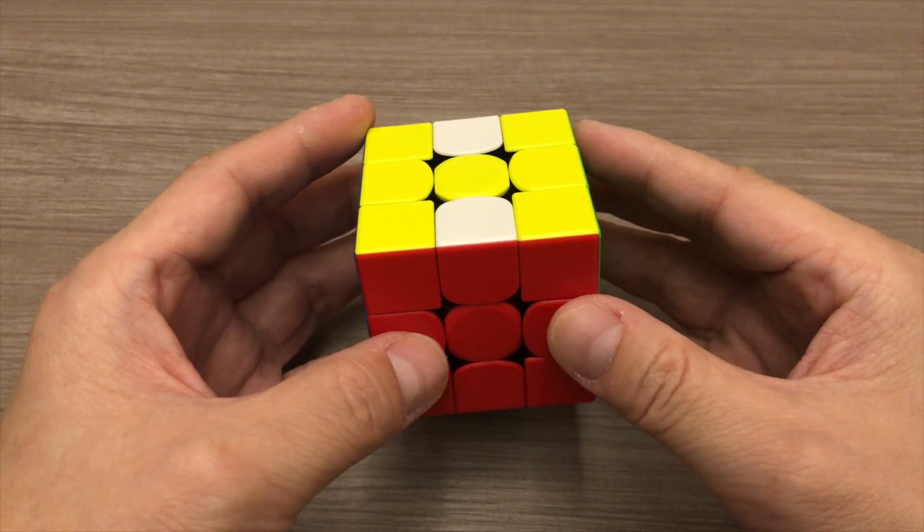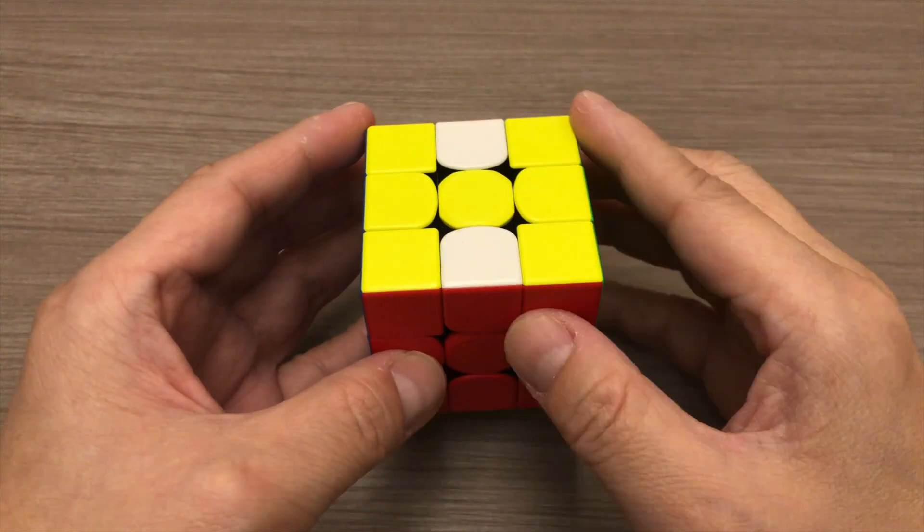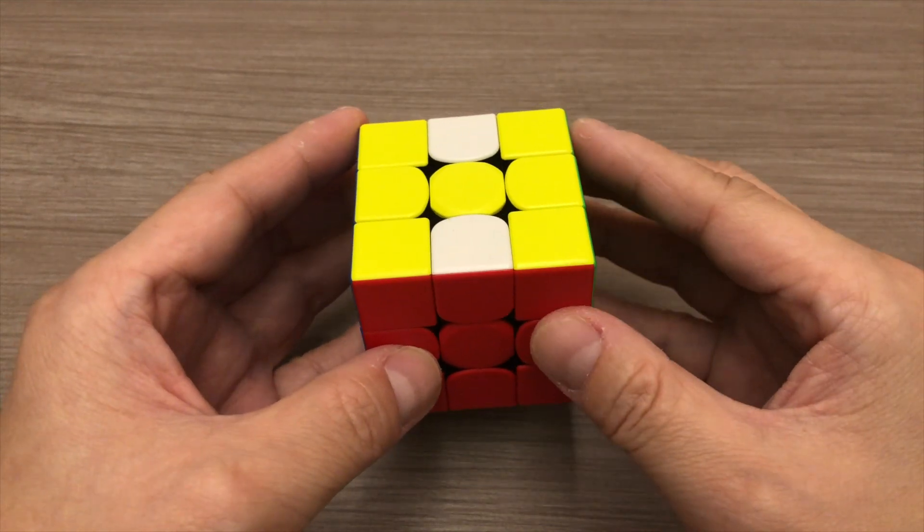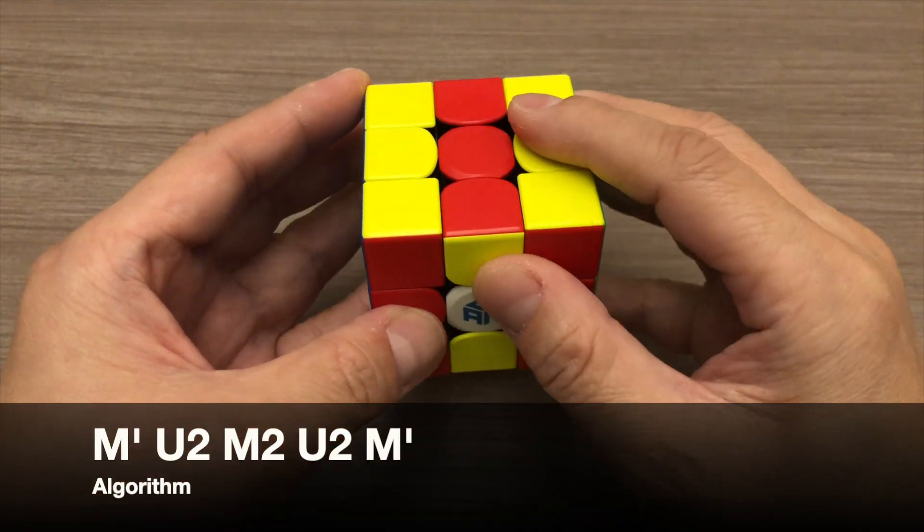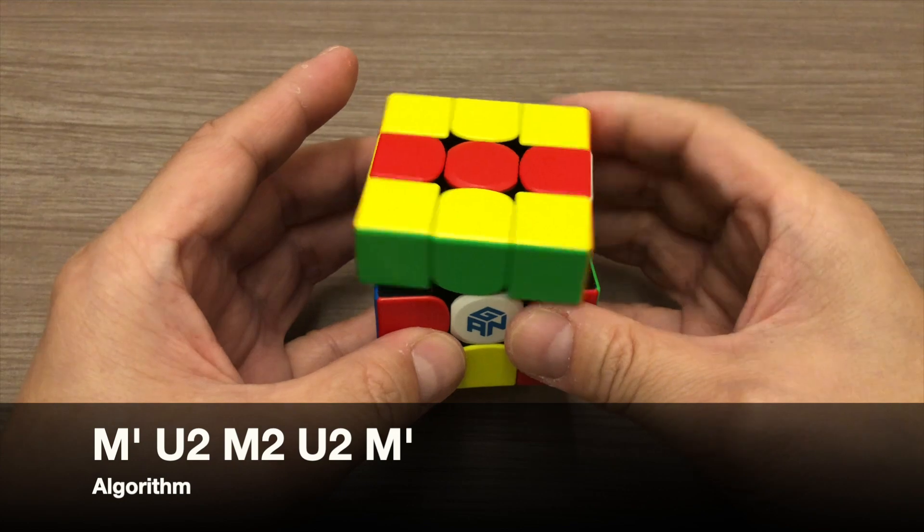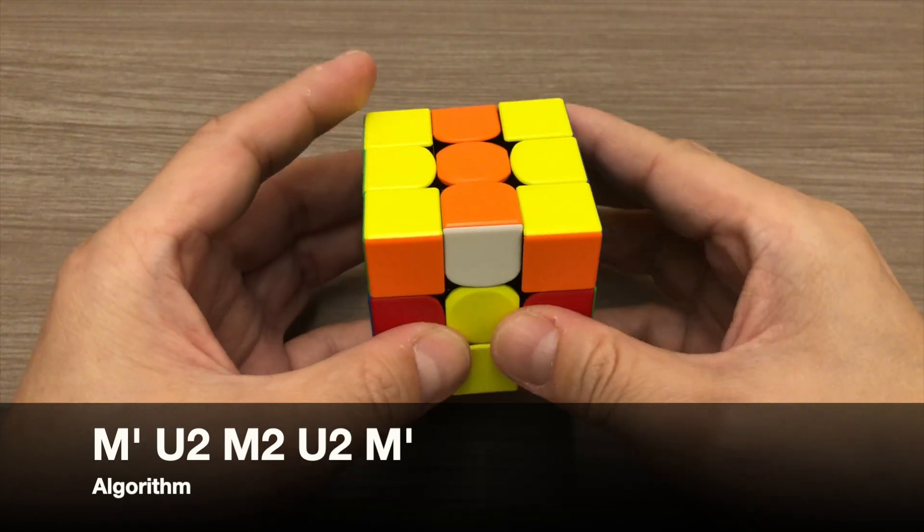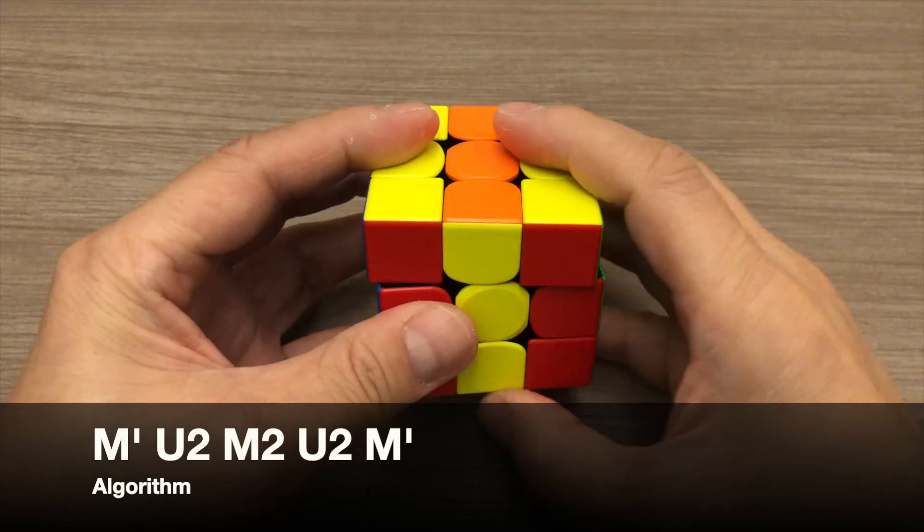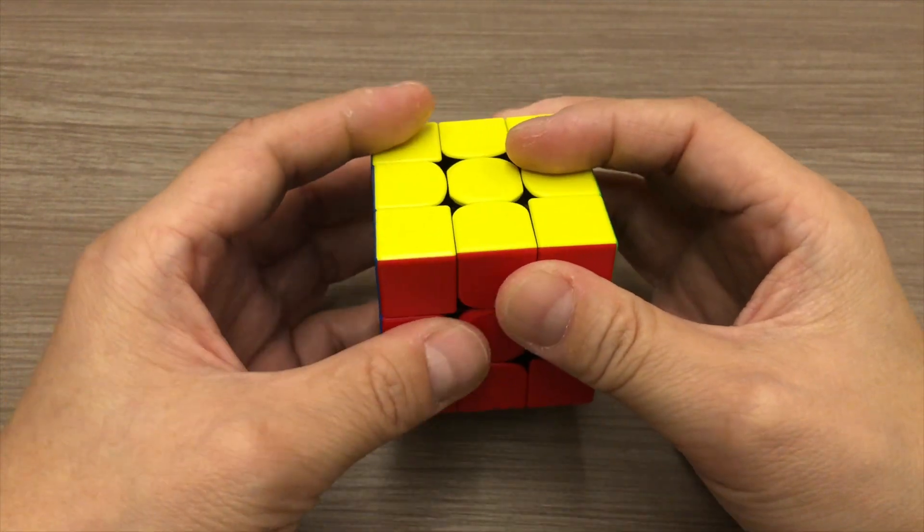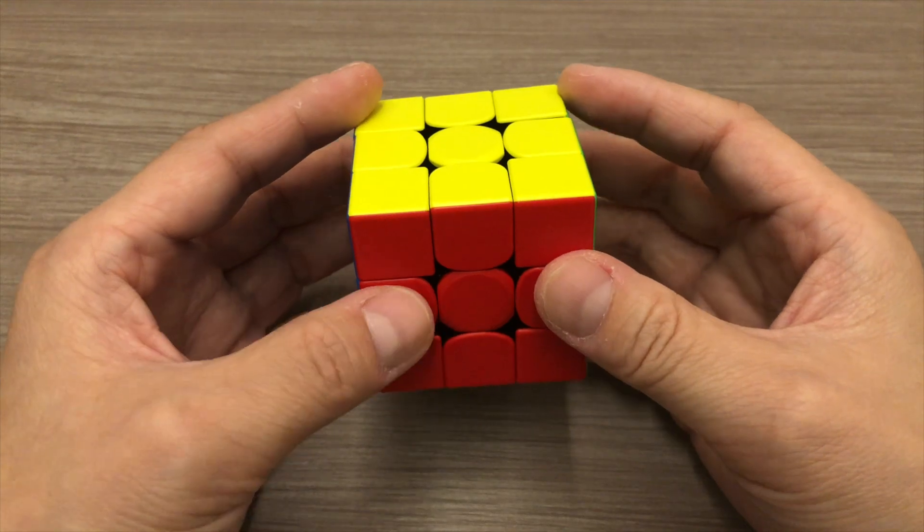Here's how it goes. First, we will position our yellow center piece facing up. Then we apply the algorithm M', U2, M2, U2, M'. And with that, we have solved the cube.